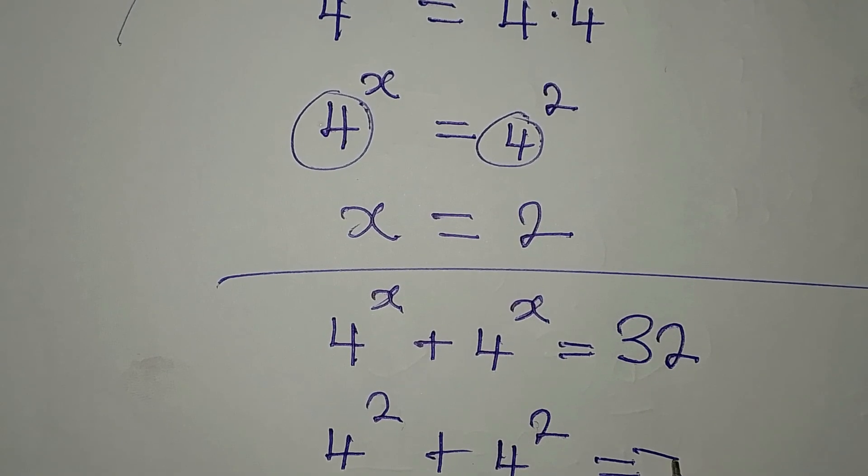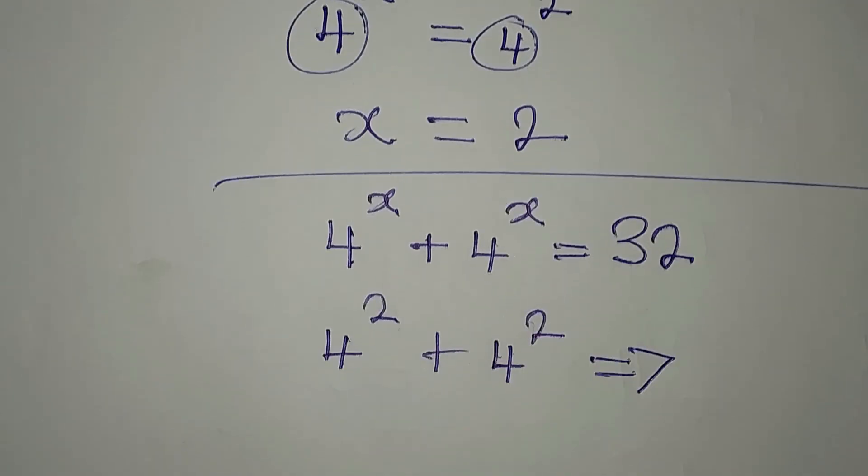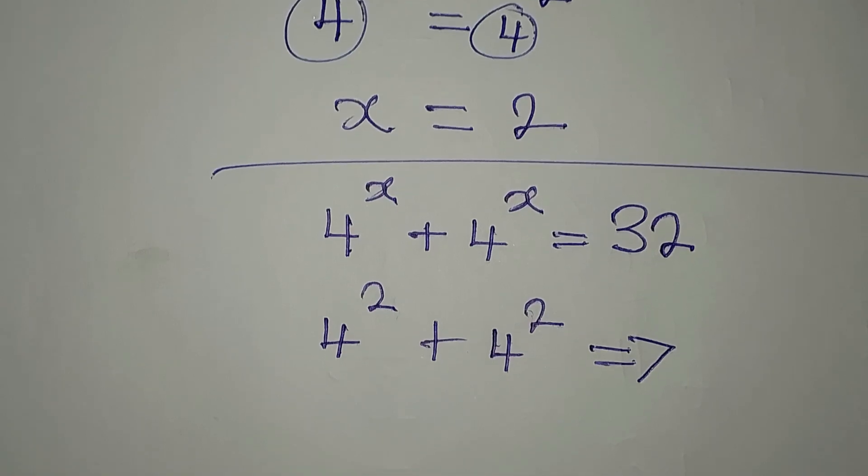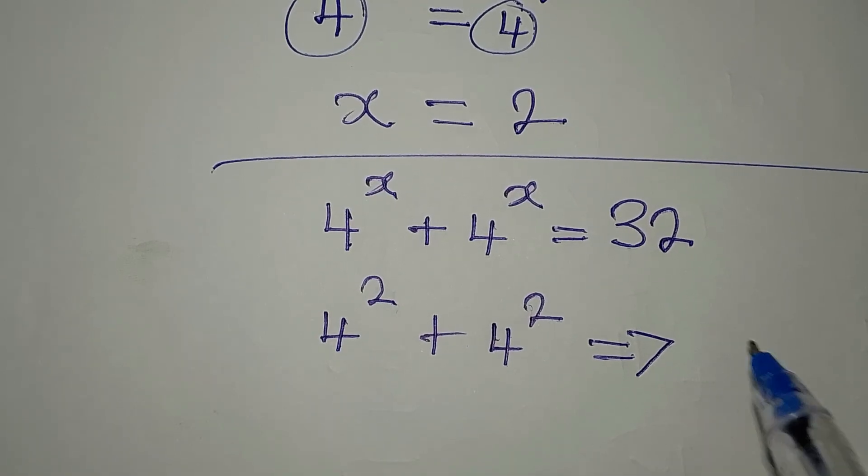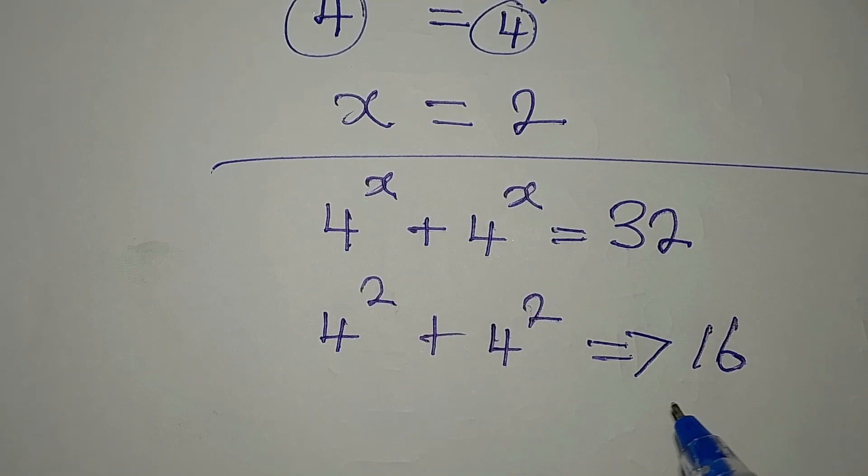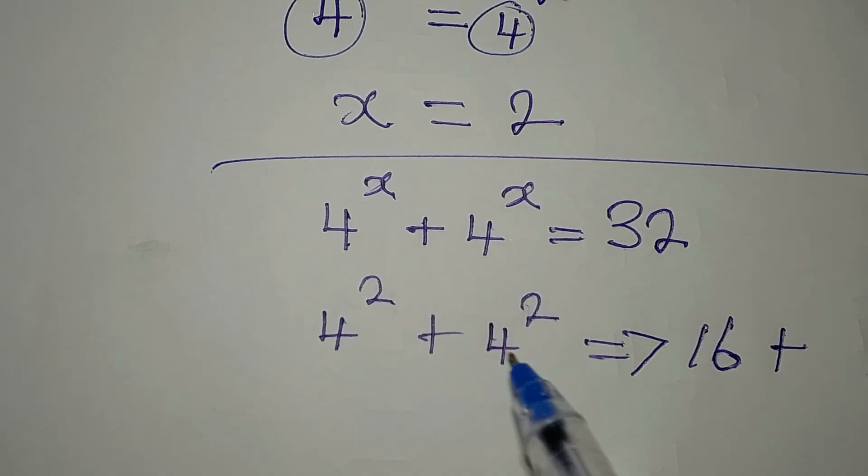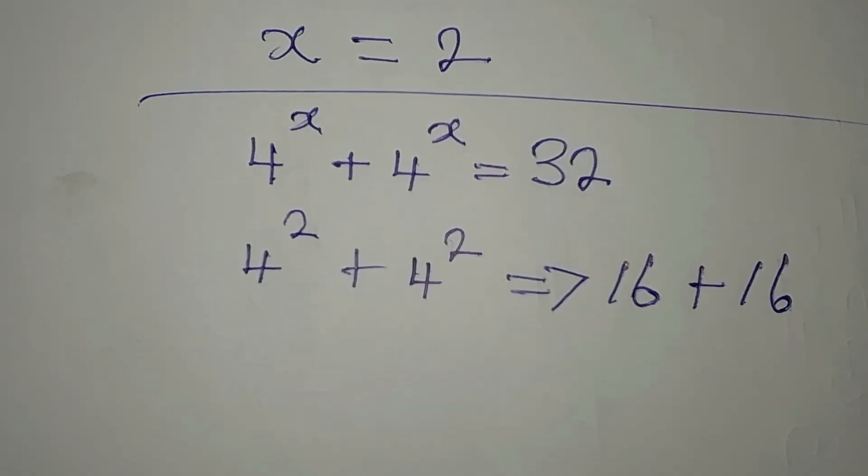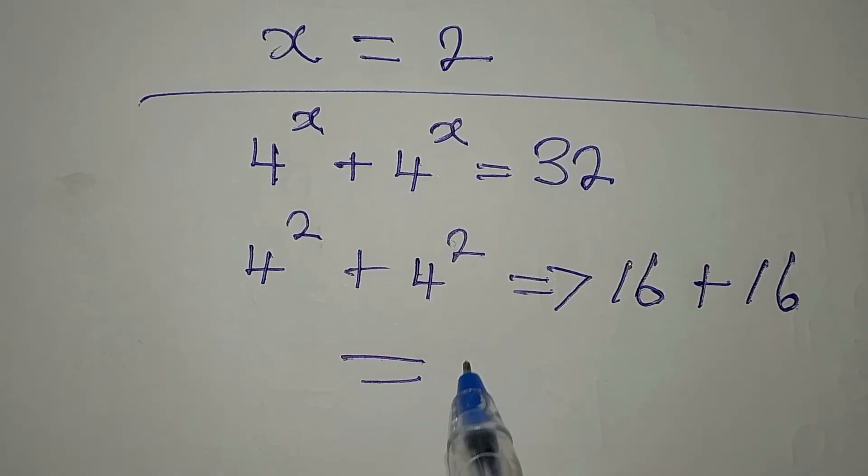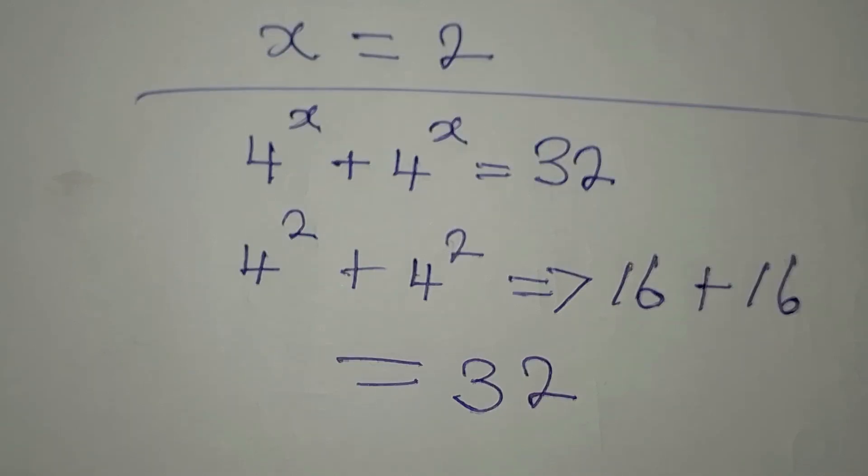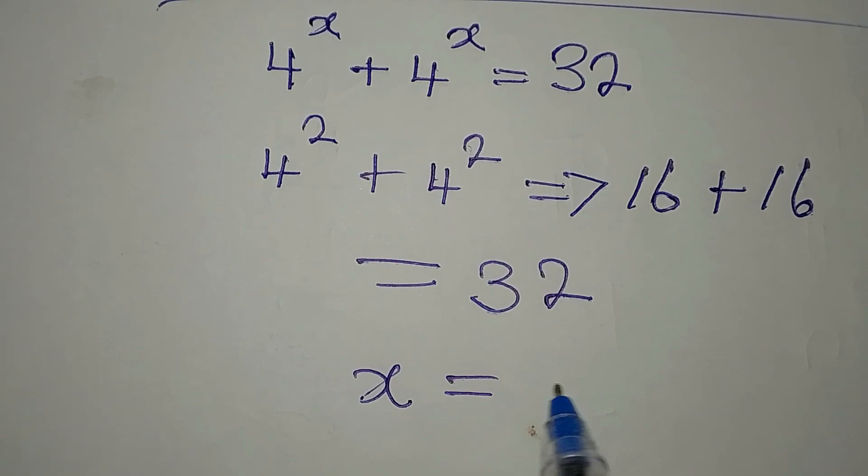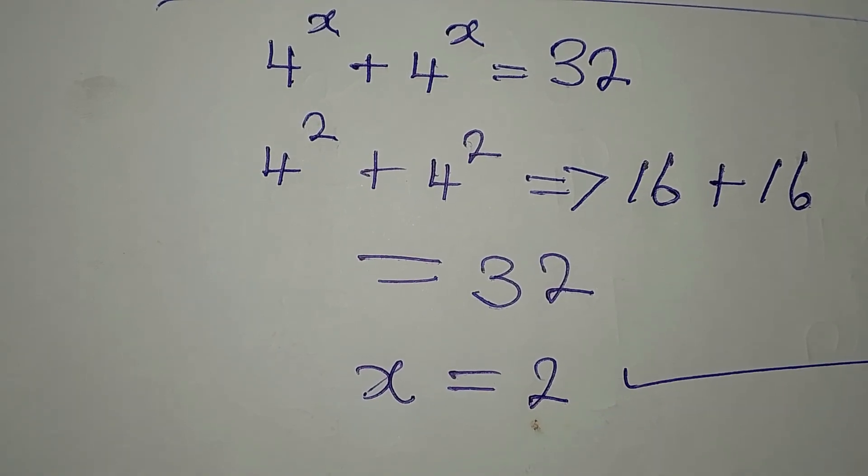Are you part of those that would say 4 squared is 8? Mind you, 4 squared is not 8, but 16. That is 4 times 4. Then, plus the next is also 4 times 4, and that is 16. And 16 plus 16 will give us 32. So we are very correct because x equals 2 satisfies the equation.